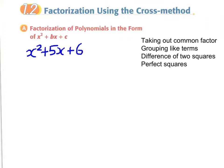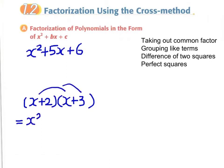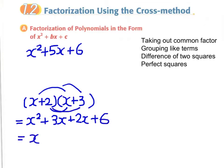Before we factorize this, let's reverse our process and do an expansion of two factors. If we expand x plus 2 times x plus 3, we get x squared plus 3x plus 2x plus 6, which gives us the expression x squared plus 5x plus 6.